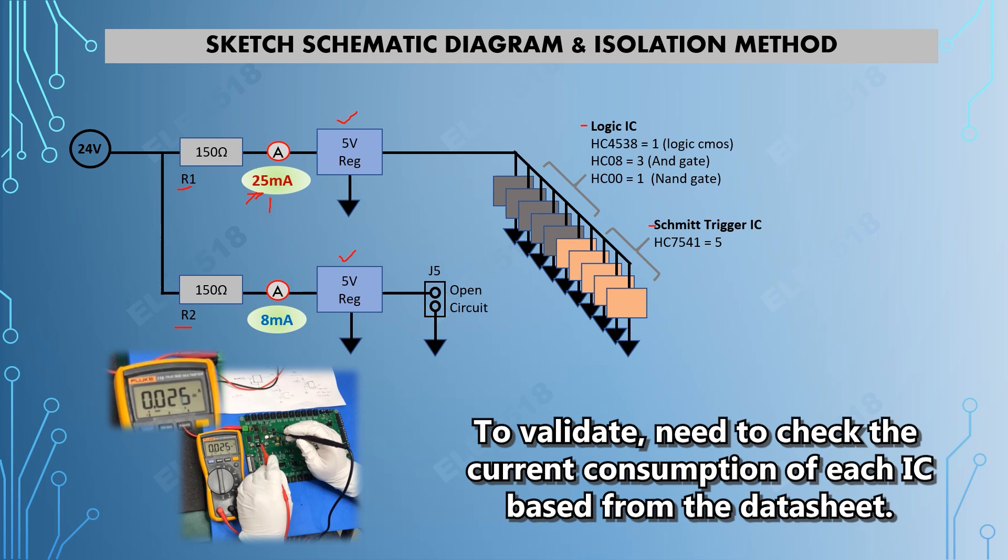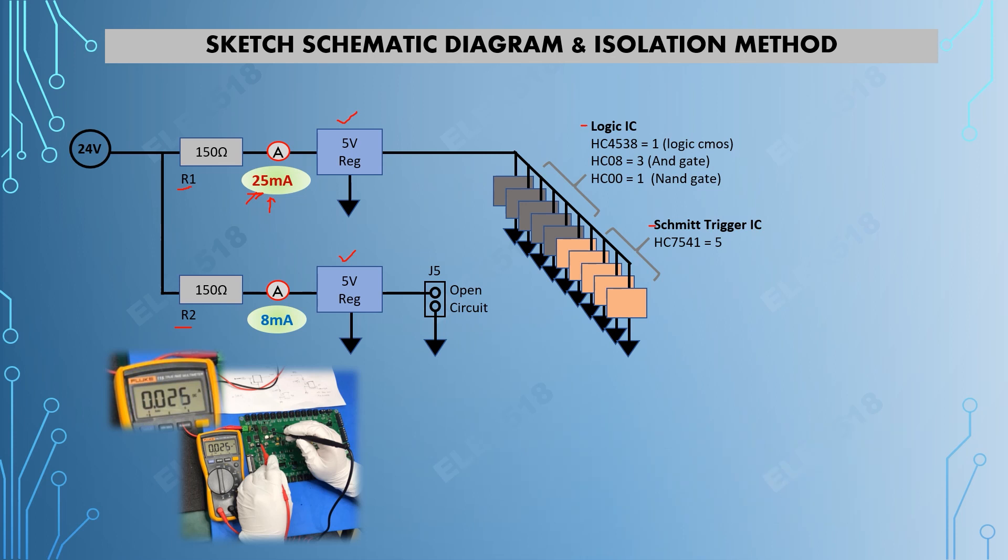After checking the datasheet, I found that the total IC consumption from the logic IC is 0.56 milliamps ICC, and the Schmitt trigger IC based on the datasheet is 0.8 milliamp.